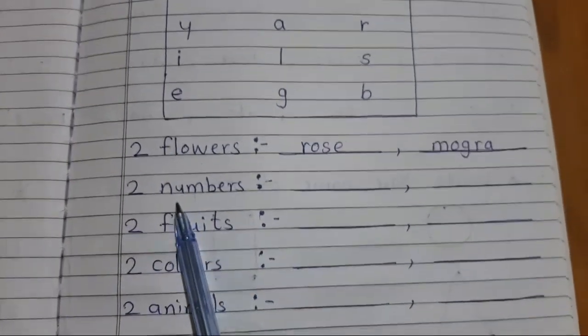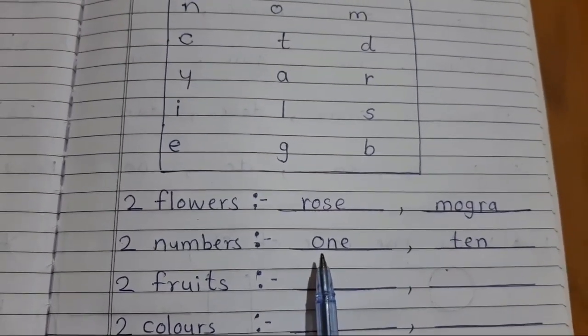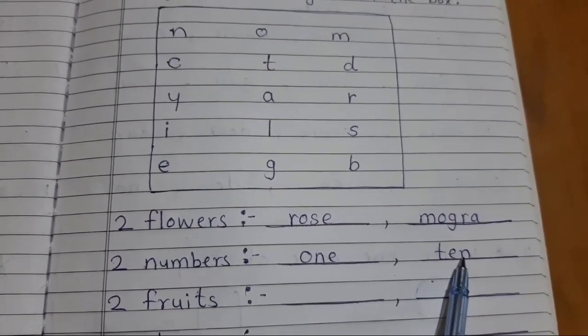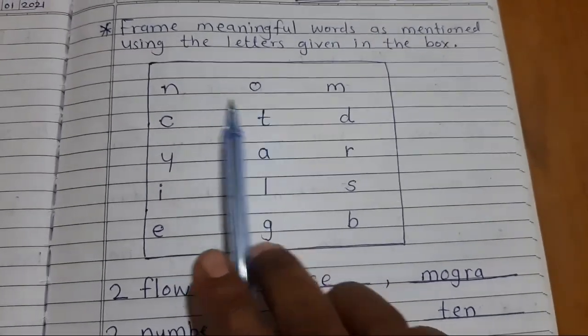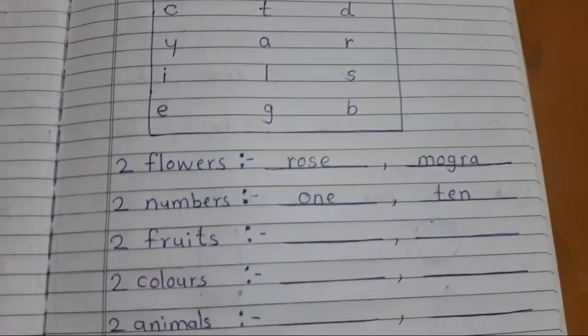Now you have to write two numbers name. See here is the two number names. O-N-E one and T-E-N ten. I use this only. O-N-E one and T-E-N ten.